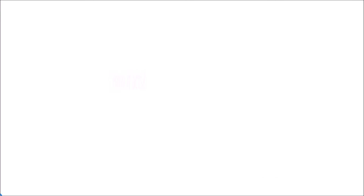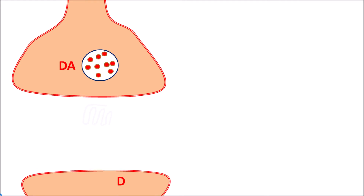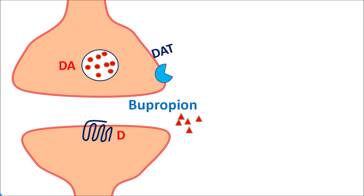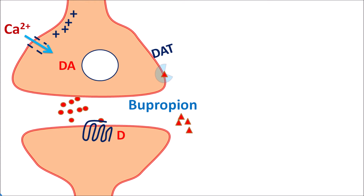In the mesolimbic pathway, dopaminergic neurons store dopamine, and dopamine receptors are present on post-synaptic neurons. The action of released dopamine is controlled by its reuptake via dopamine transporters on the presynaptic neurons. Bupropion blocks these dopamine transporters, thereby increasing dopaminergic transmission and causing more dopamine to be released, which then acts on post-synaptic dopamine receptors, resulting in their activation.